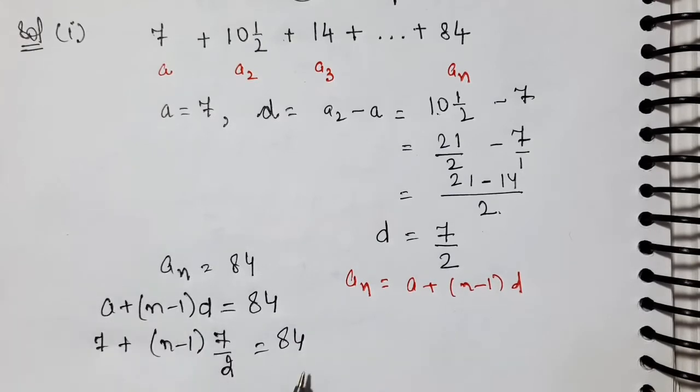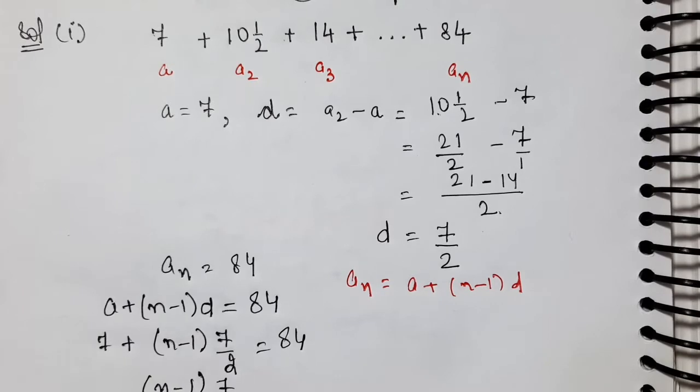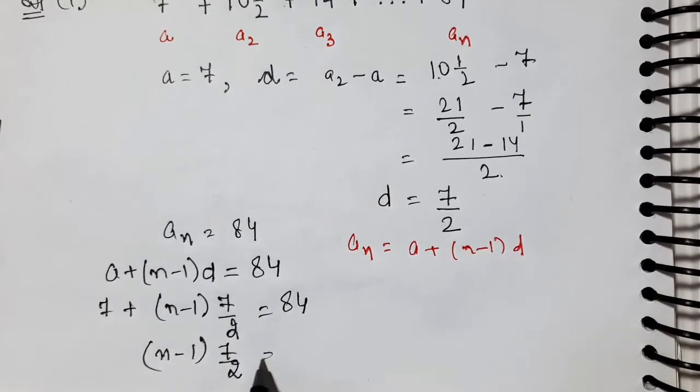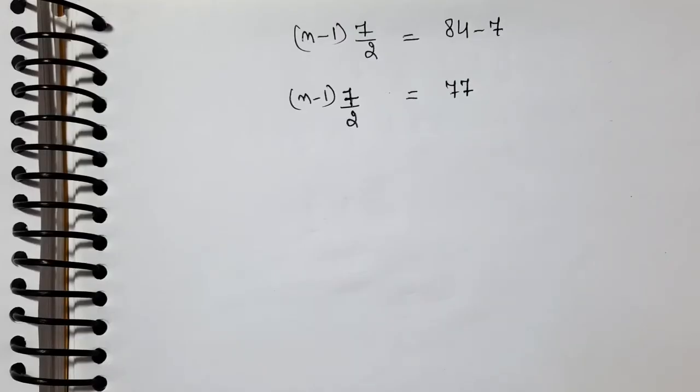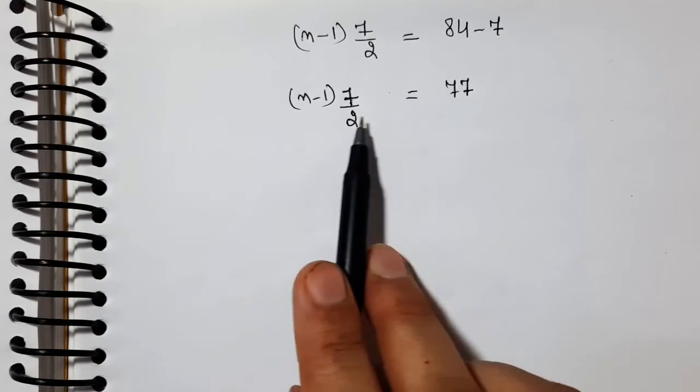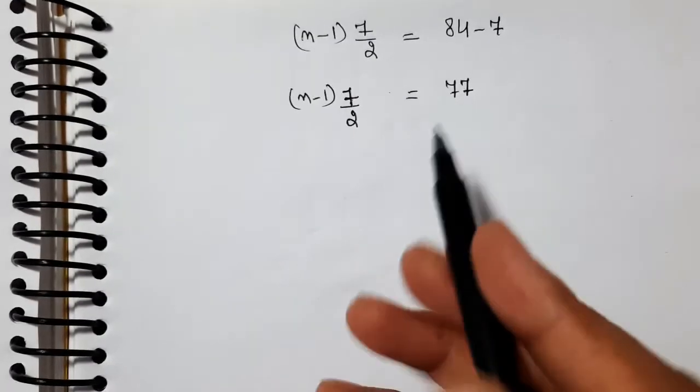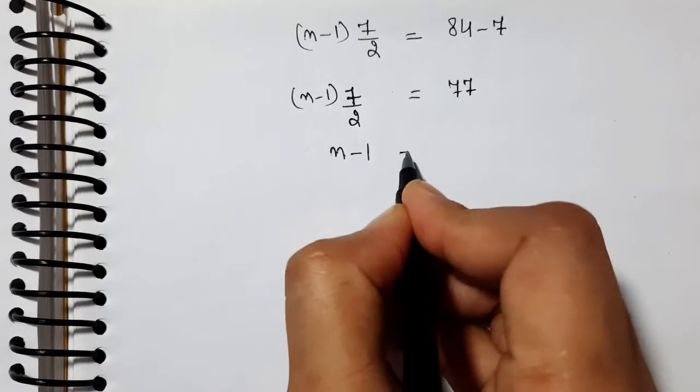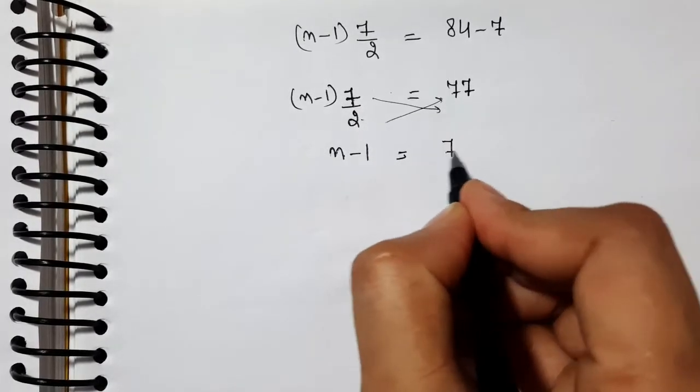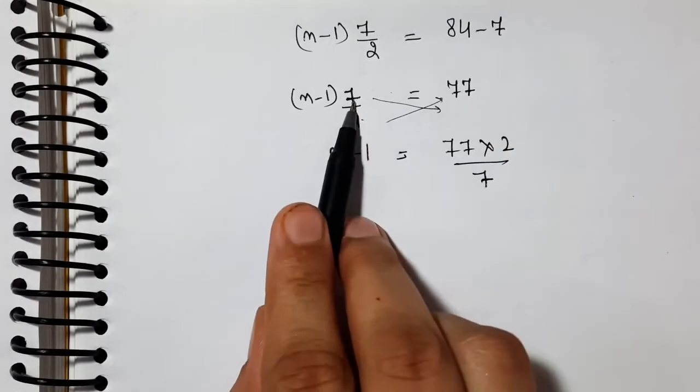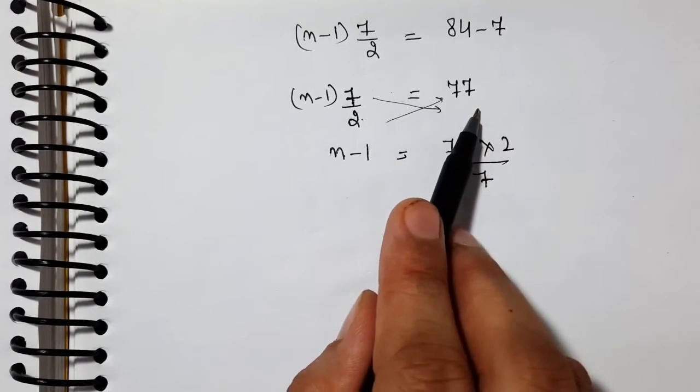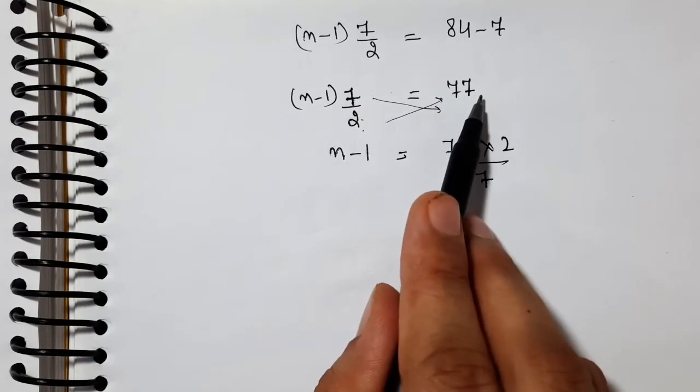After subtracting, we get 21 minus 14, which is 7 by 2. So d value is 7 by 2. Now our nth term, let's write that here. nth term is 84. So apply the nth term formula. What was the formula? a_n is equal to a plus (n minus 1) times d.